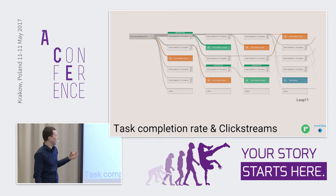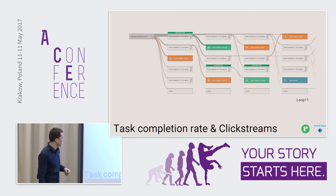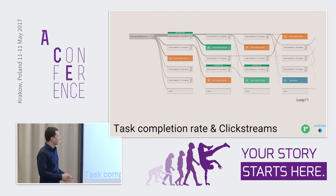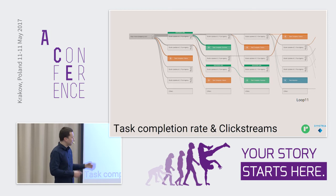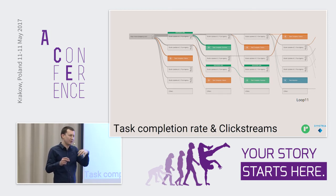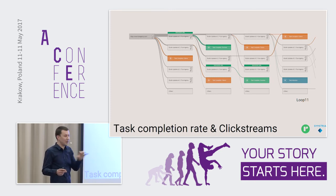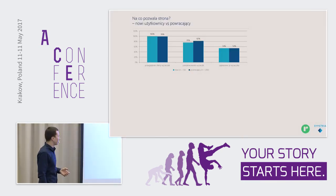You can analyze click streams and check not only the task completion rate — how easy it is to do the task — but also which path successful users took through your website, or if they didn't succeed, where they went wrong and where the problem is along that path. This is a quantitative approach to understanding usability.